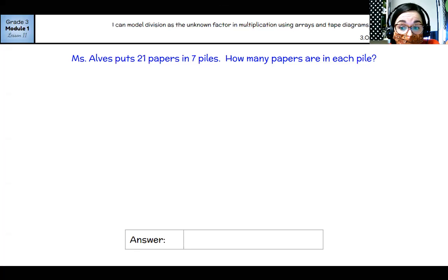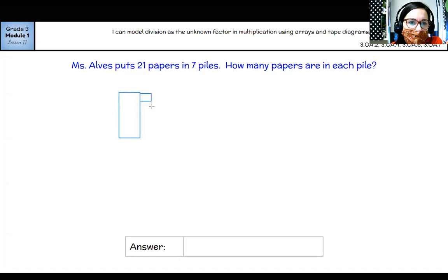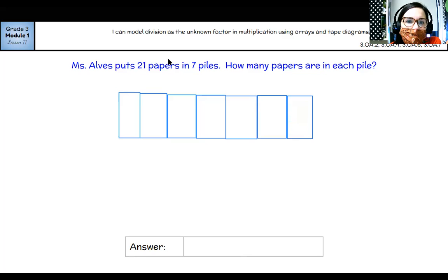Okay. Now this question is a little bit different. Ms. Alves puts 21 papers into seven piles. How many papers are in each pile? So in this question, we already know how many groups there are, right? There are seven groups. I'm going to try to use this. Three, four, five, six, seven. All right. So she has 21 papers that she has to share between these seven piles. So I'm going to use the fair share strategy.